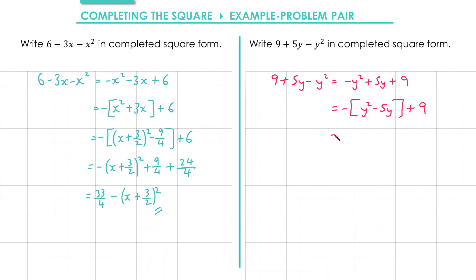Next we complete the square for y squared minus 5y. Half of 5 is 5 over 2, so we get y minus 5 over 2 all squared. 5 over 2 squared is 25 over 4, so we have minus 25 over 4.